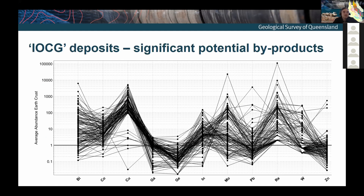Each individual line represents an individual analysis of 0.5% copper or more than 250 ppm molybdenum. The most obvious significant enrichment of critical minerals is around cobalt, with some grades reaching the lower grades commonly extracted in other parts of the world today. Another interesting one is indium — the enrichment in some deposits goes to a couple of orders of magnitude. More spectacular but limited to just a few deposits is enrichment in rhenium, specifically focused in molybdenum-rich varieties of the IOCG family.